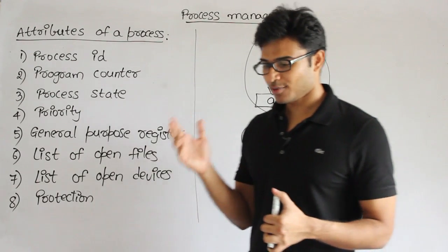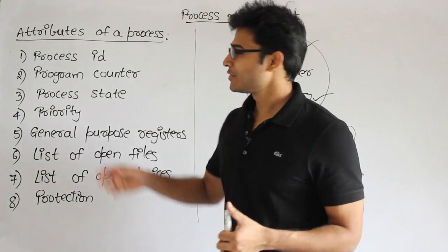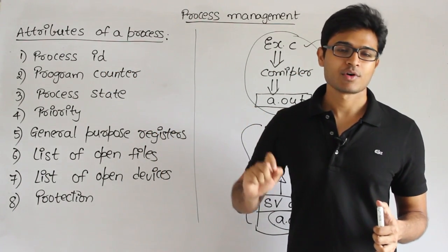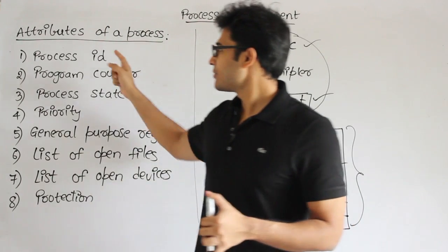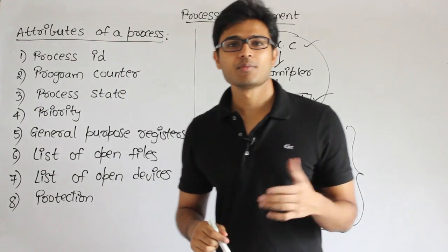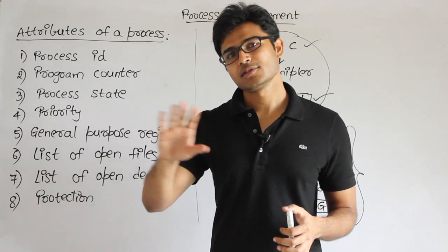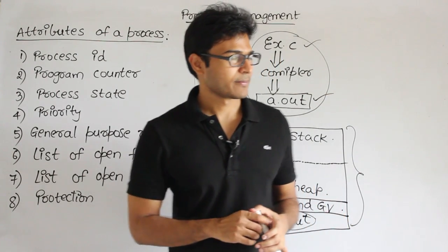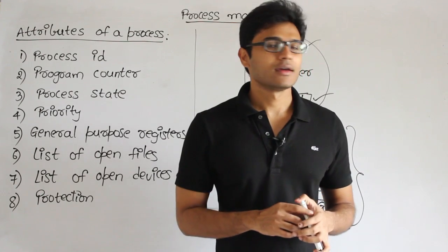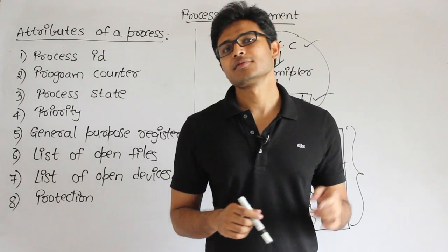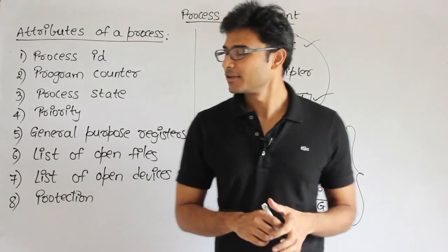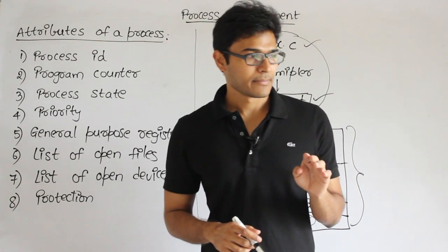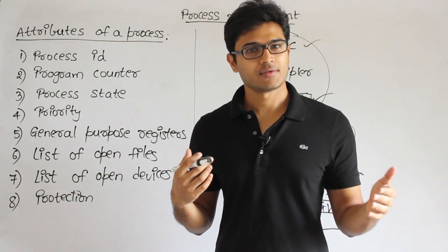Process ID is useful because we obviously cannot name a process the way we name people, so it is a unique number given to a process. In a computer, every process will get a different number. Coming to process ID, it is not like a port number which is universal — the process ID depends on the operating system. Some operating systems use 16-bit and some use 32-bit for the process ID.